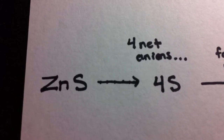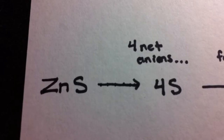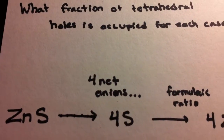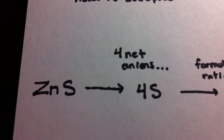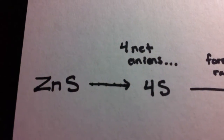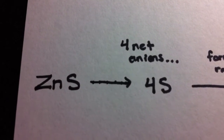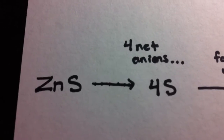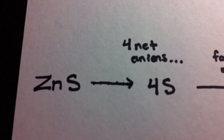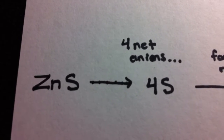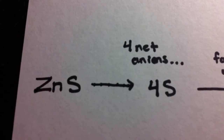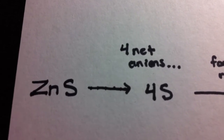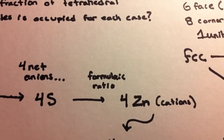We're first given the formula of zinc sulfide. We know it's going to be an FCC unit cell, so it's going to have four net atoms. These four net atoms refer to the net anions, because anions are just so much larger than the cations. So we're going to have four sulfide anions. We want to figure out the number of cations, and we can do that using the formulaic ratio. We can see that we have one zinc atom for every sulfide atom — a one-to-one ratio. So for four sulfide anions, we're going to have four zinc cations.